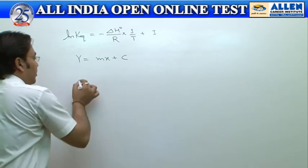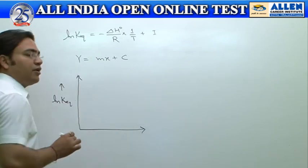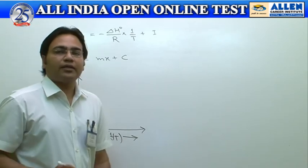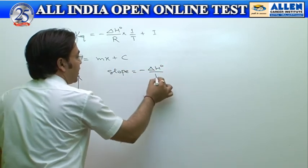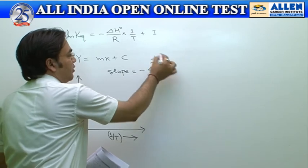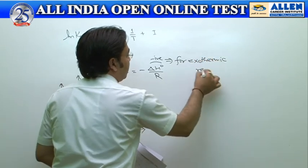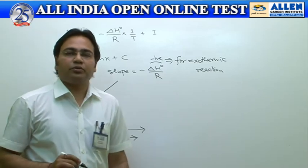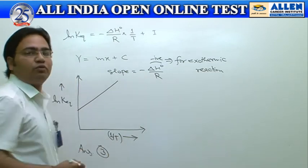If we compare this equation with a straight line equation y equals mx plus c, in the given graph ln K equilibrium is present on the y-axis and 1 upon T is present on the x-axis. Hence, the slope should equal minus delta H upon R. If the reaction is exothermic, then delta H will be negative. Hence, minus times minus will become plus, so the net value should be positive. It means the correct answer should be third, because slope equals minus delta H upon R.